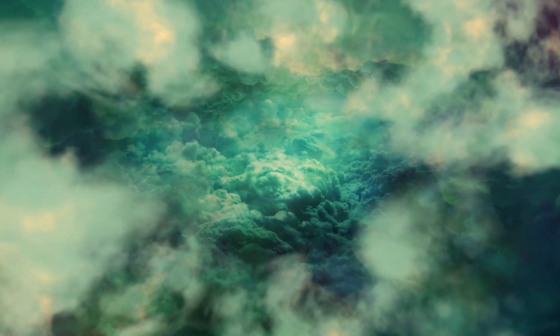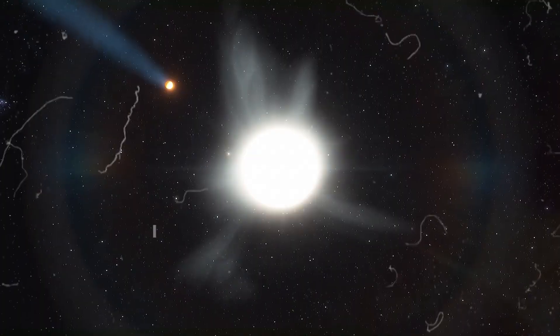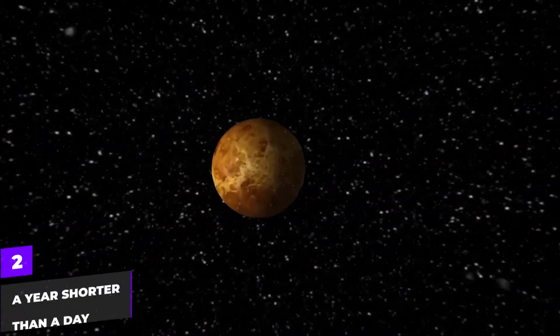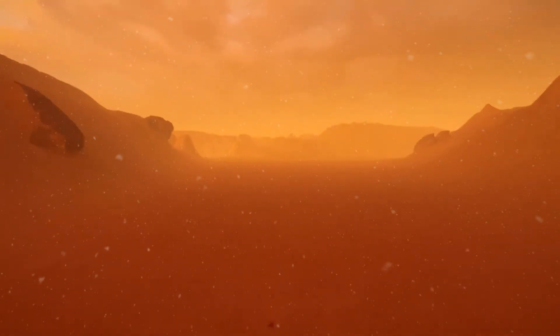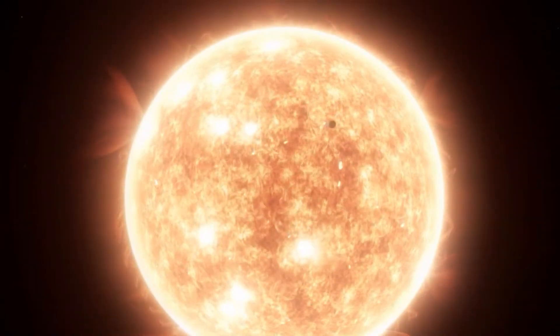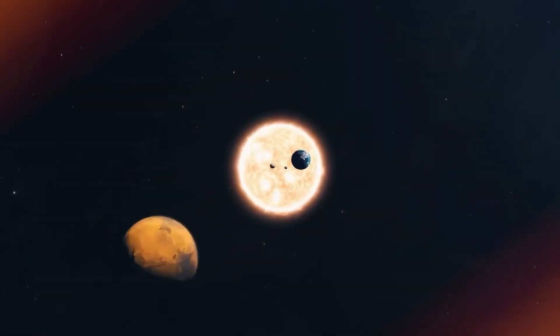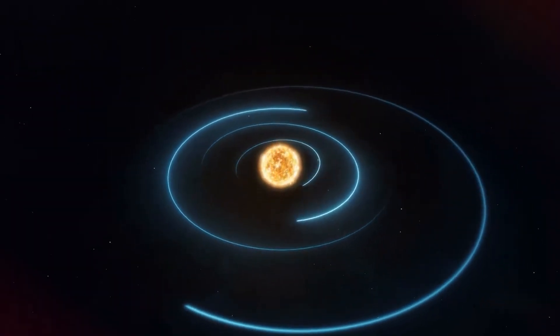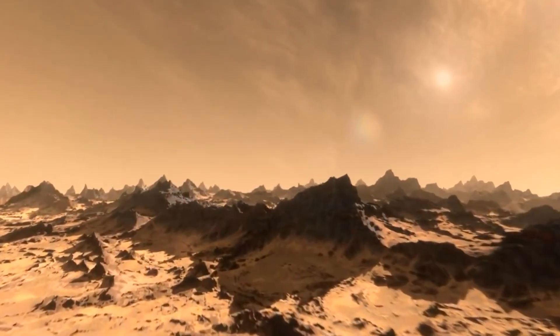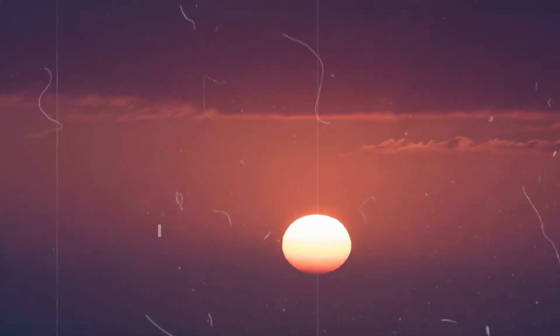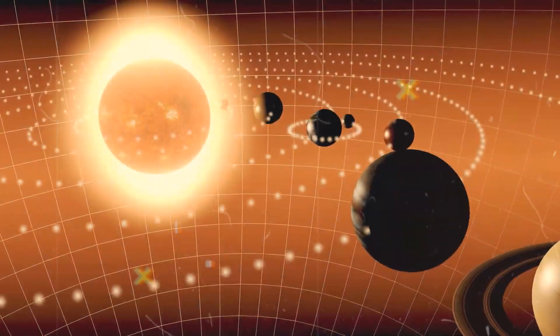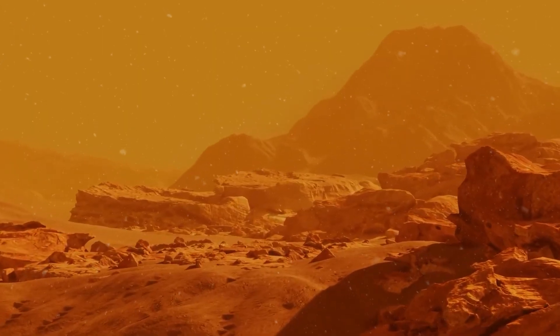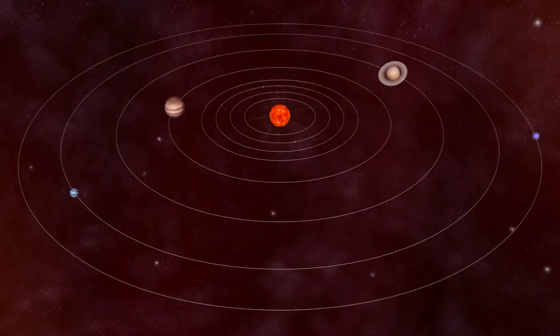A year shorter than a day. Venus, the second planet from the Sun, has a very slow rotation on its axis, taking about 243 Earth days to complete one rotation. However, it only takes about 225 Earth days for Venus to complete one orbit around the Sun. This means a year on Venus, one complete orbit around the Sun, is shorter than a day on Venus, one complete rotation.